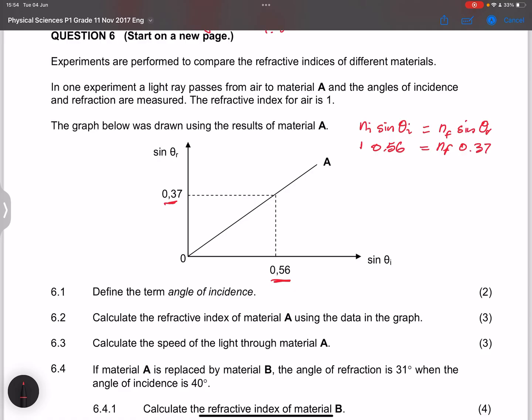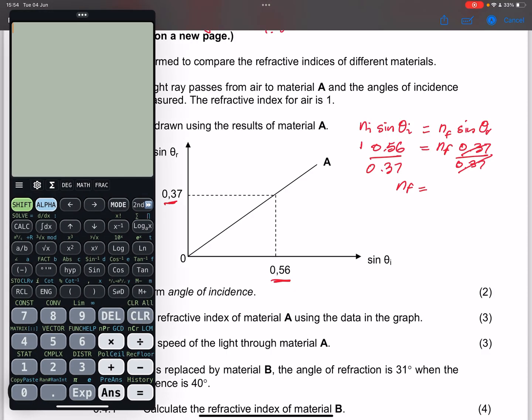So all we simply are going to do is just divide both sides by 0.37. And if we cancel that. Now, if you notice there.